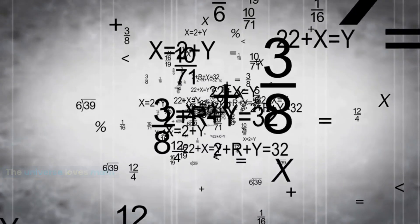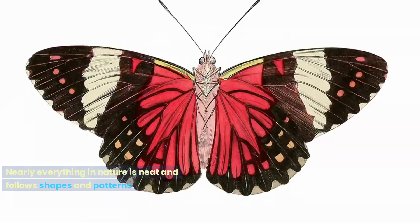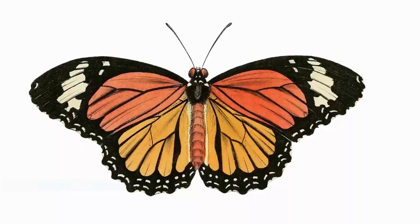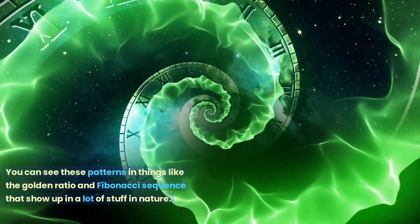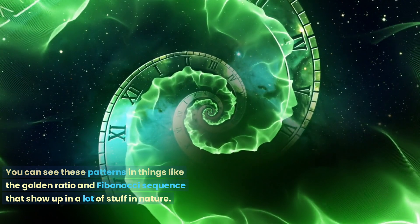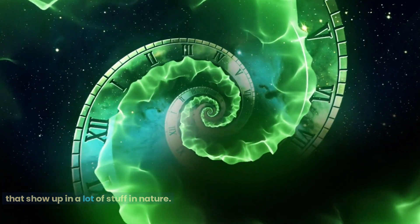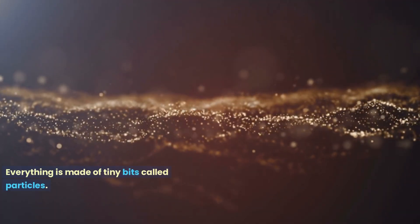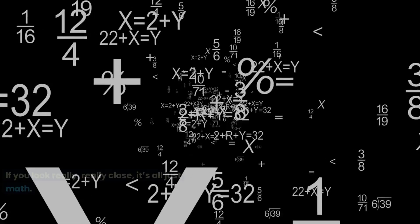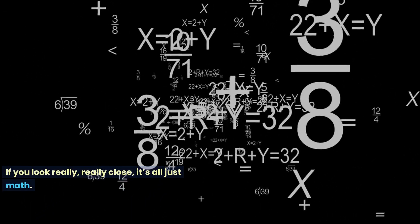The universe loves math. Nearly everything in nature is neat and follows shapes and patterns. You can see these patterns in things like the golden ratio and Fibonacci sequence that show up in a lot of stuff in nature. Everything is made of tiny bits called particles. If you look really close, it's all just math.